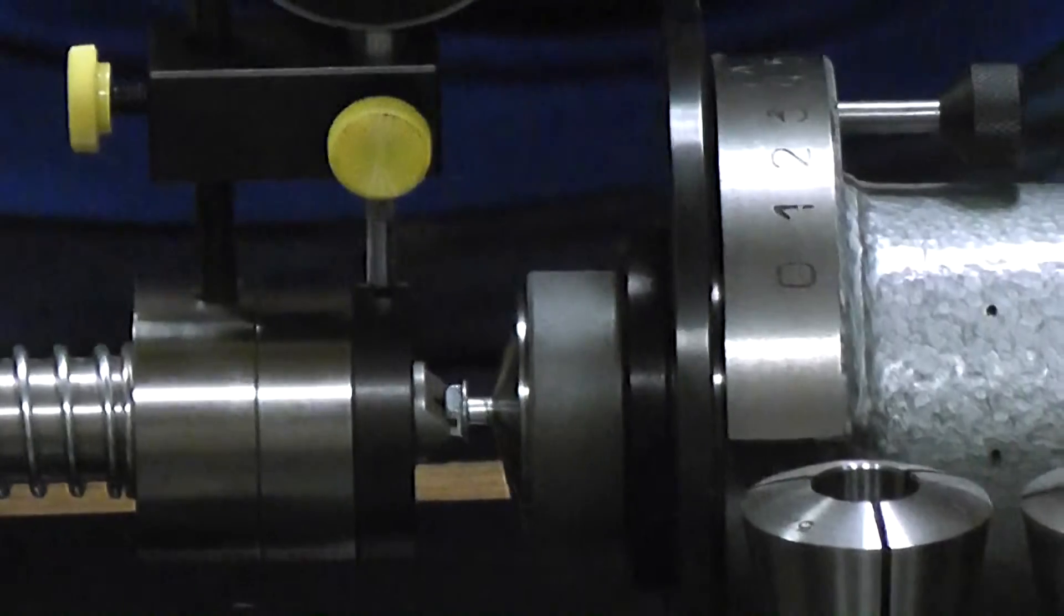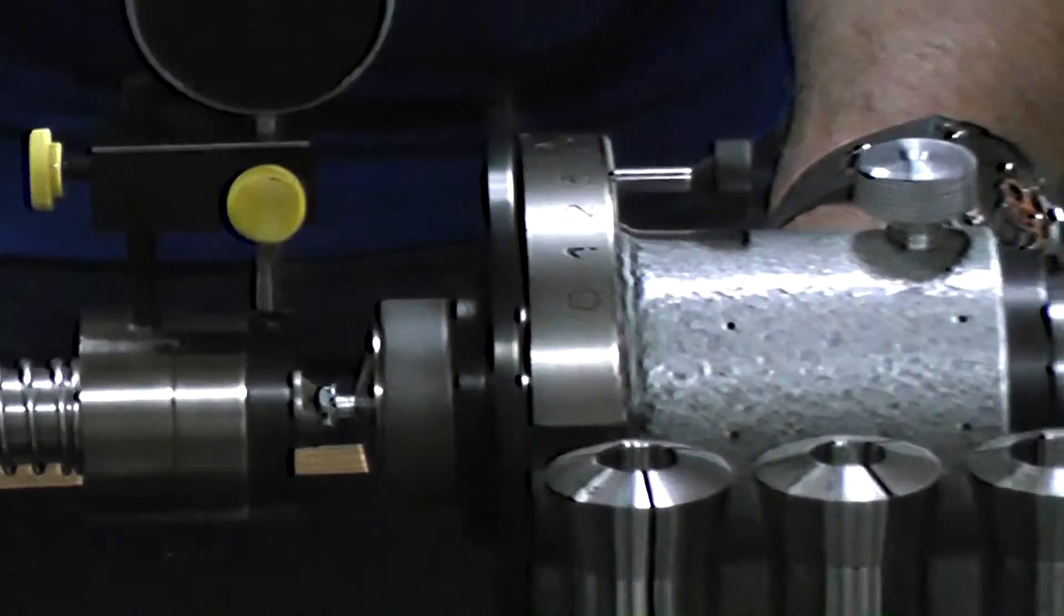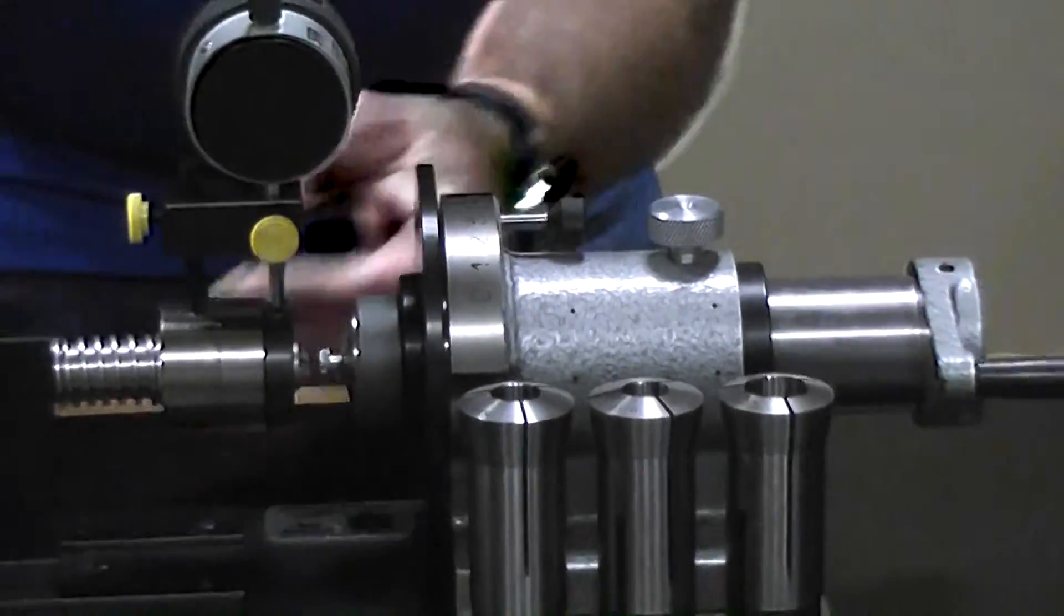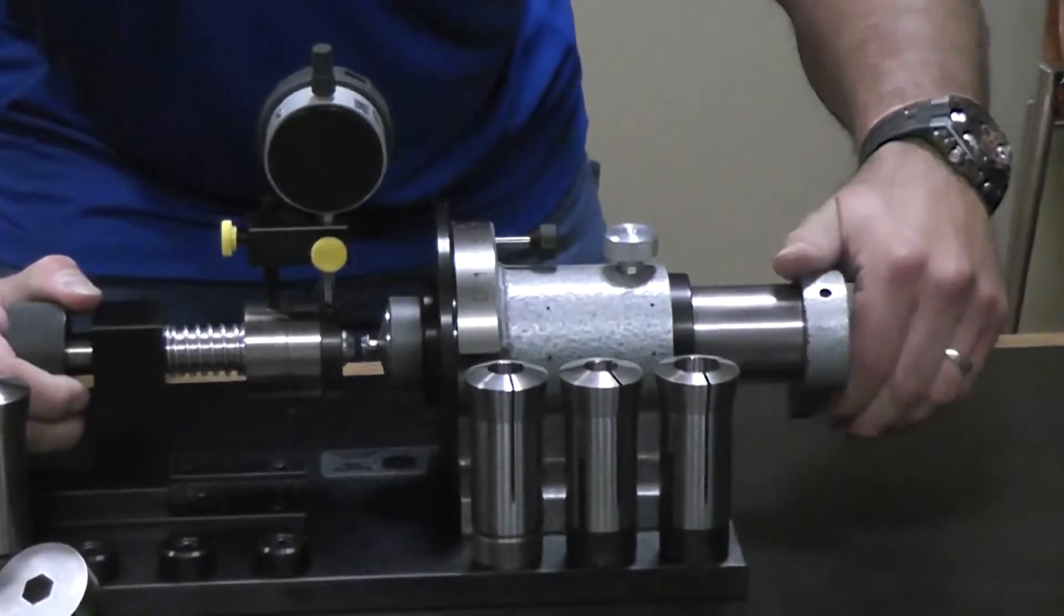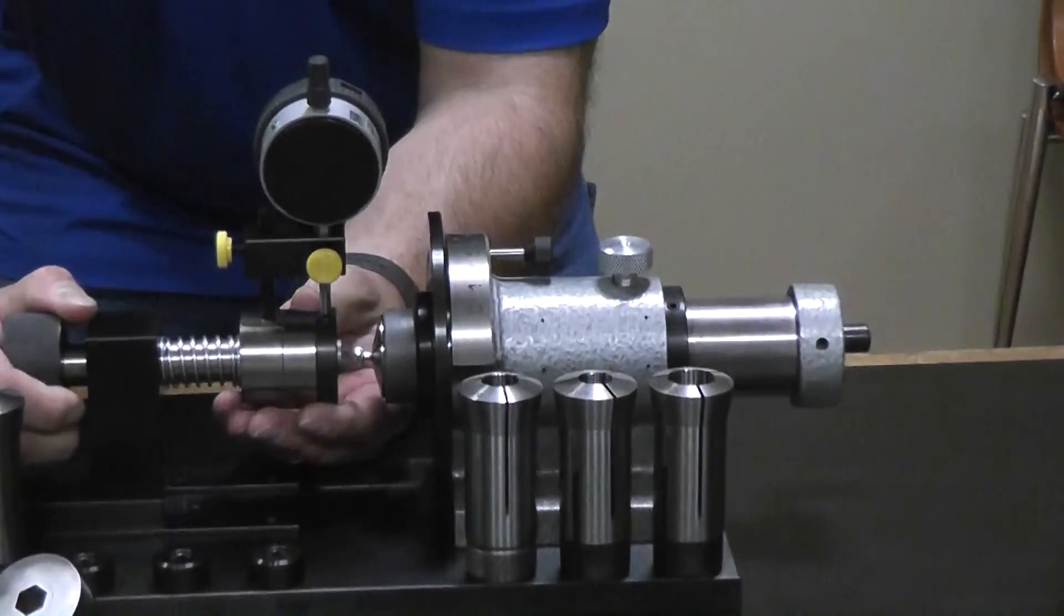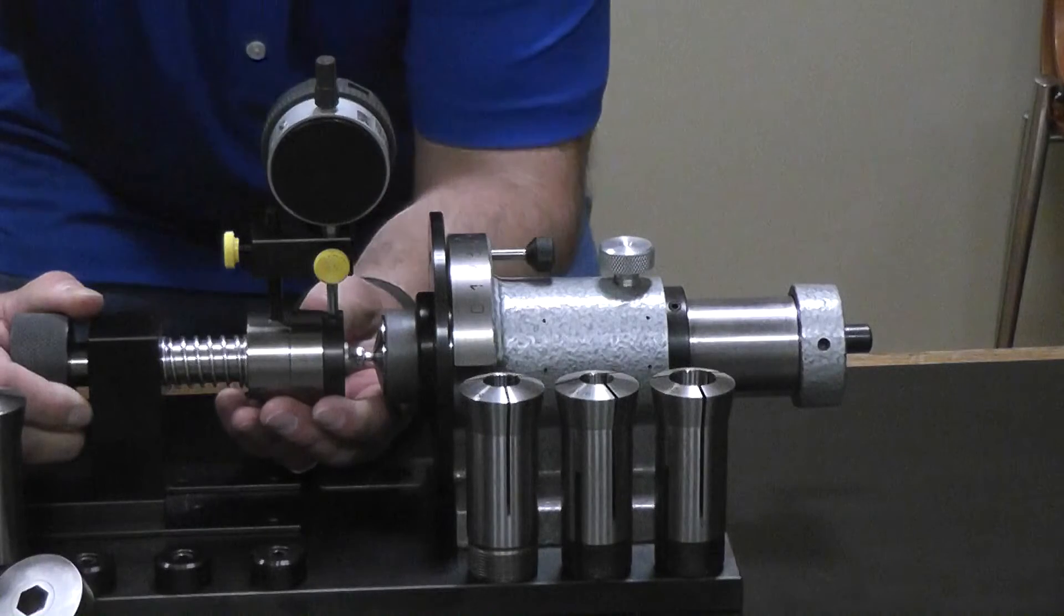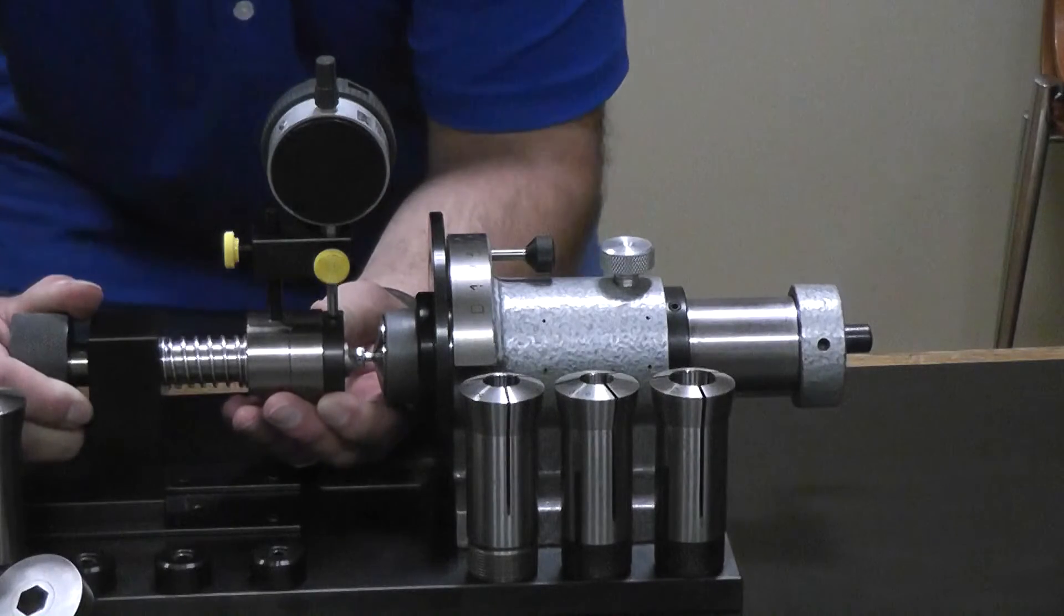Then, what you want to do is you want to pull this back to release the pressure. Rotate your part 180 degrees. Position this back into the slot.